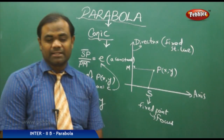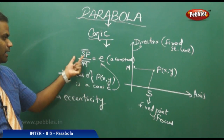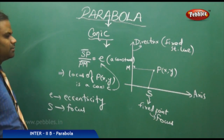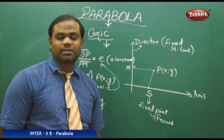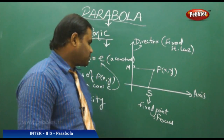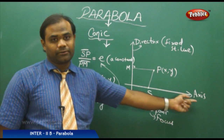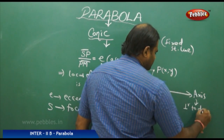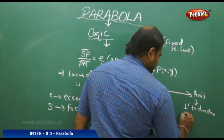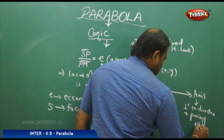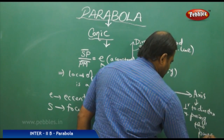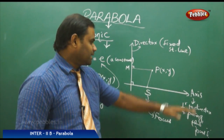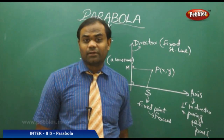So E is referred to as the eccentricity, given by the formula SP divided by PM, where S is the focus and the fixed line is the directrix. The straight line passing through the focus and perpendicular to the directrix is called the axis. These are the key properties — focus, directrix, eccentricity, and axis — that define a conic.